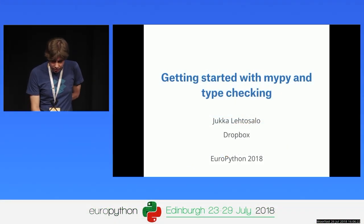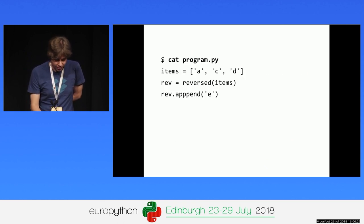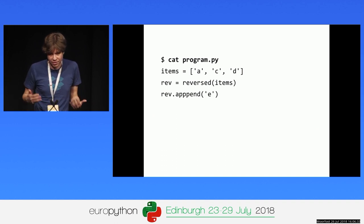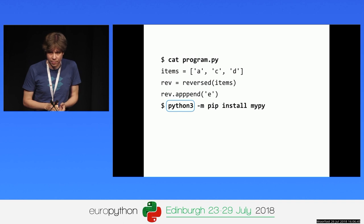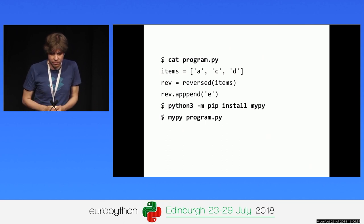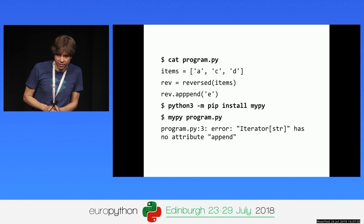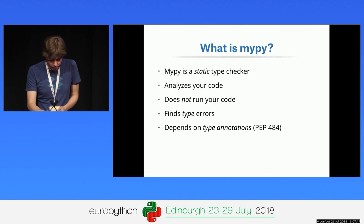Let's start with a very small example — a tiny program, only three lines, that seems pretty straightforward. Let's see if we can type check it using mypy. Turns out this program has an error: reversed() returns an iterator and you can't append to an iterator. So mypy found a bug.